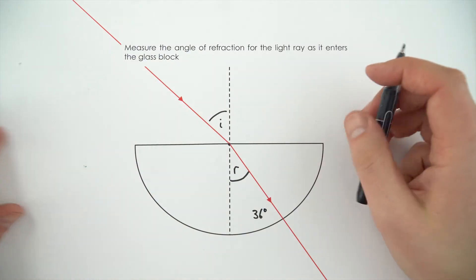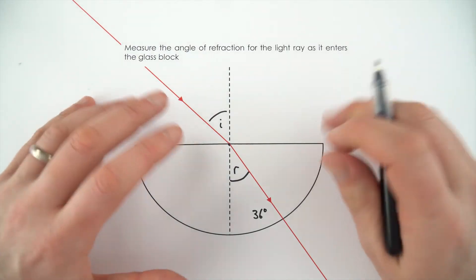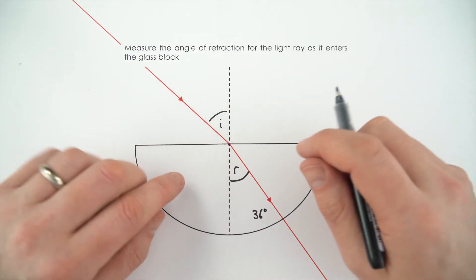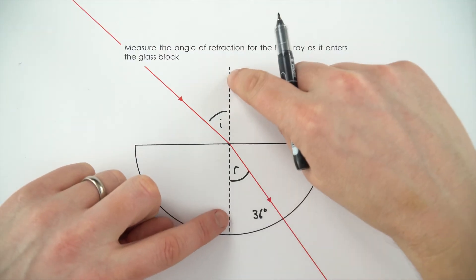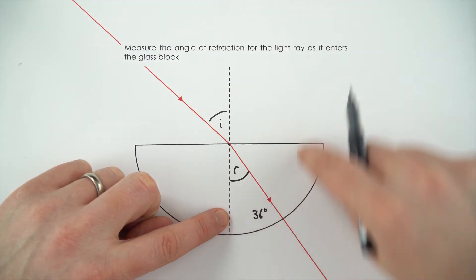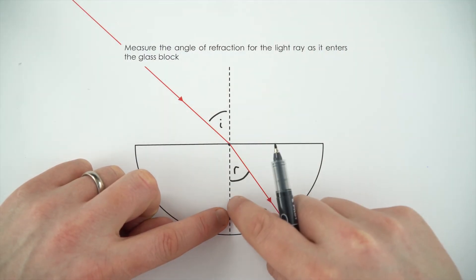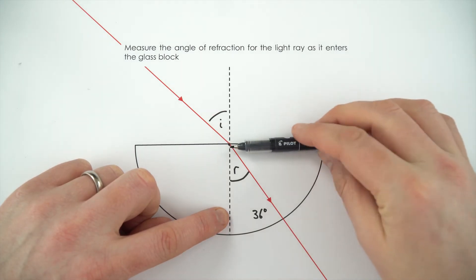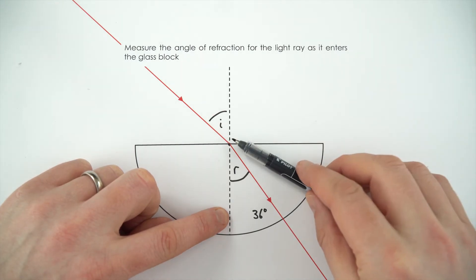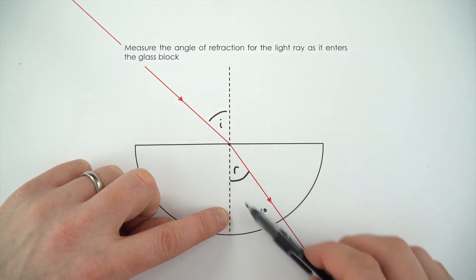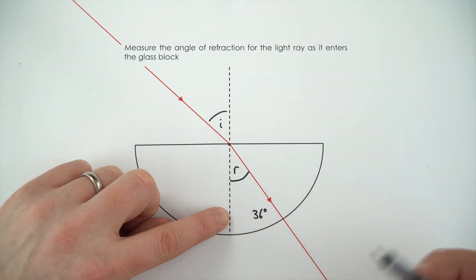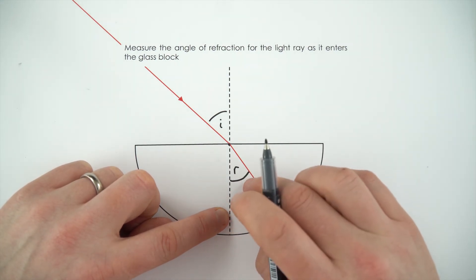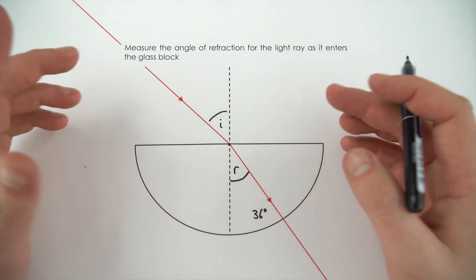Now the final thing you can do when you measure an angle is just check to see if it looks about right. We know that this is 180 degrees, so between this line and this line is 90. If we think: that's 90, that's 60, and that's about a third of it, so it's just over 30. So 36 degrees looks about right for this angle. And that's all there is to it.